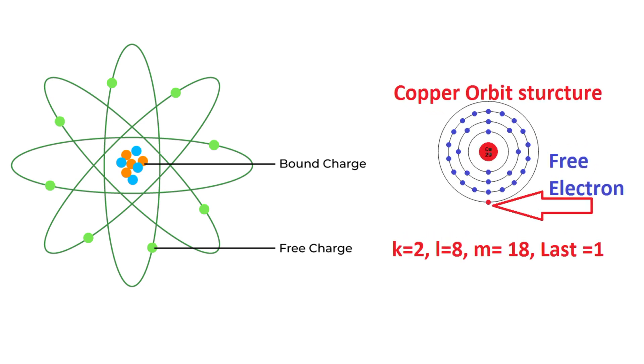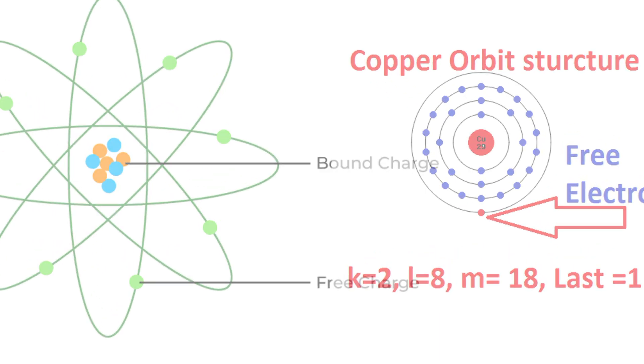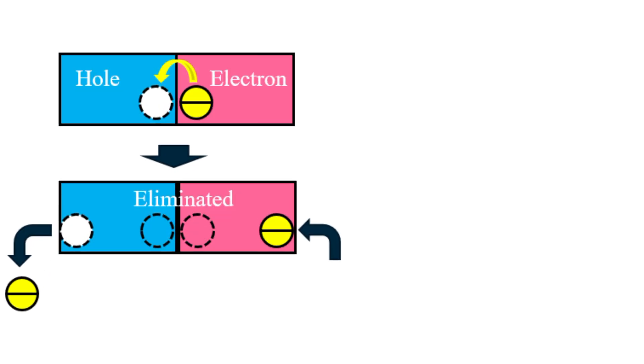This is the complete concept of an electron. Now let's talk about what is the concept of holes. Basically, a hole is an absence of an electron in a particular place in an atom.